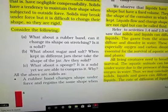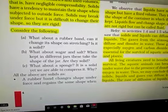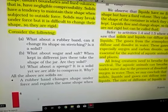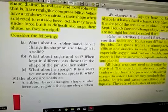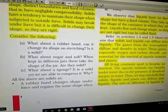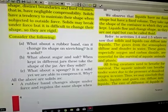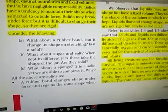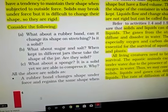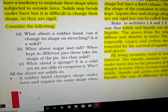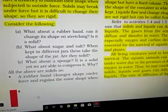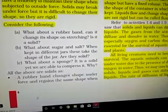Exercise B: What about sugar and salt? When kept in different jars, these take the shape of the jar. Are they solid? Yes, they are solid. Because when you put them in the jar, particles are very small. They take the position in different corners of the jar, and in this way they take the shape of the jar as a bulk. But individual particles of sugar and salt have definite shape and definite volume. So we can say sugar and salt are solid.